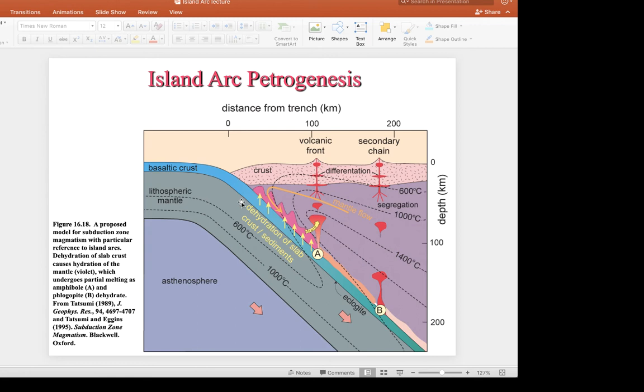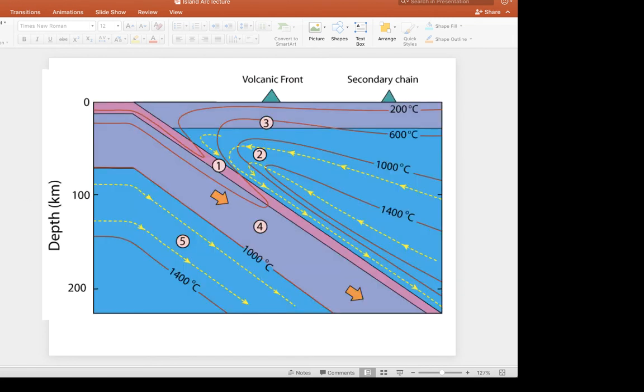And so the way we get that cold material at such great depth is by shoving this material down very, very quickly. And so that's what's being shown here. All of these isotherms are being subducted just like the material is being subducted. What we're really subducting is thermal energy, or in this case, a lack of thermal energy. We're taking cold material and shoving it into the mantle.